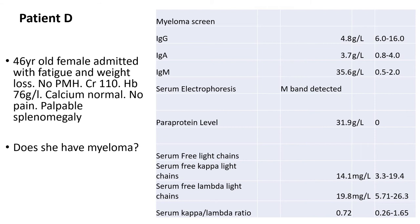When we have a look, the IgG and IgA are both within normal limits, but the IgM is very high at 35.6. An M band is detected and she's got a paraprotein of 31.9 grams per litre. The light chains are fine.